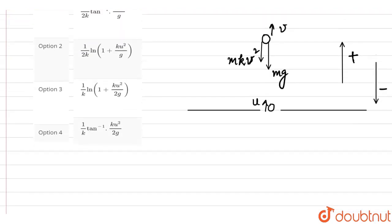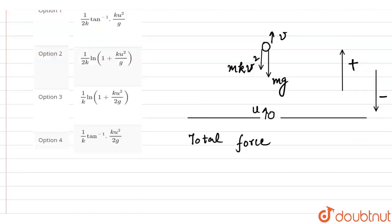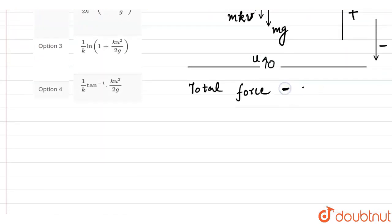Now let's find out the total force acting on the ball. Total force is mg plus mkv squared. This is the net force. We can compare it with mass into acceleration. This is equal to mg plus mkv squared.